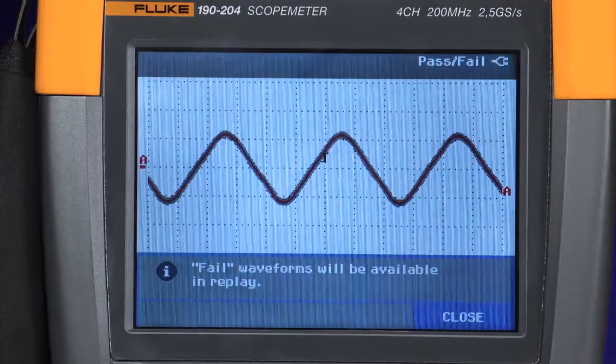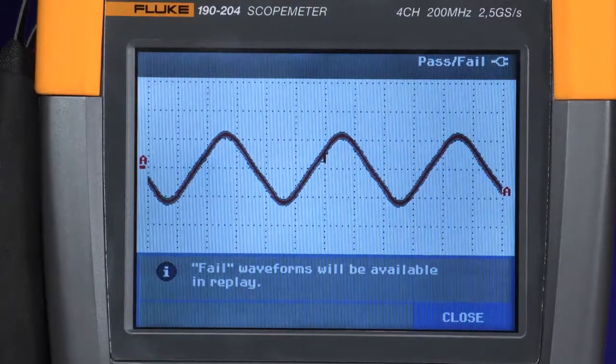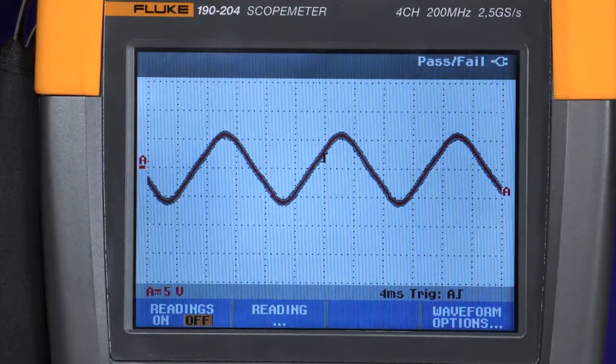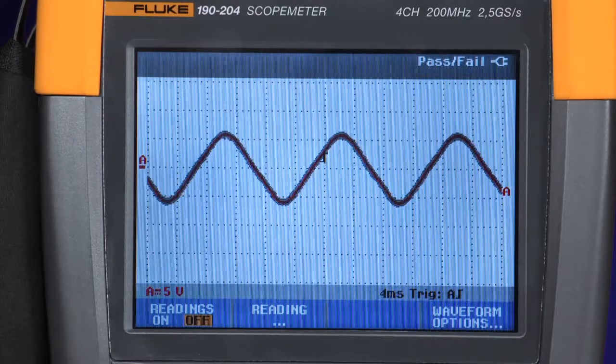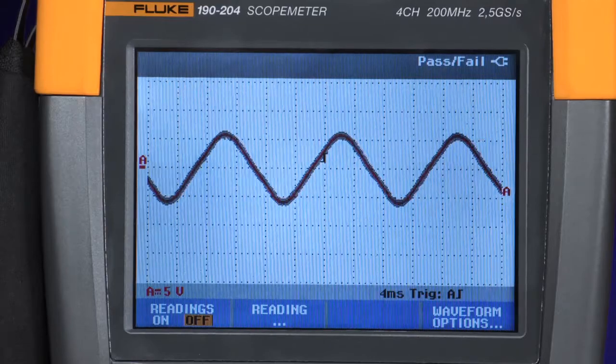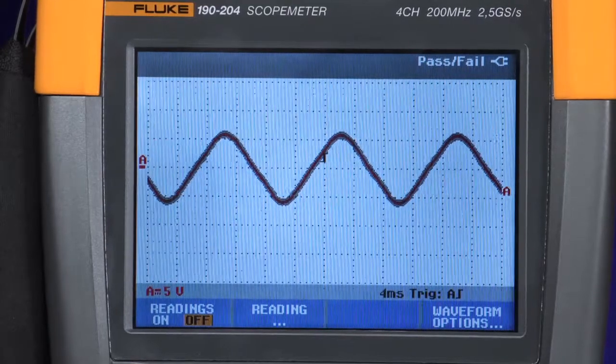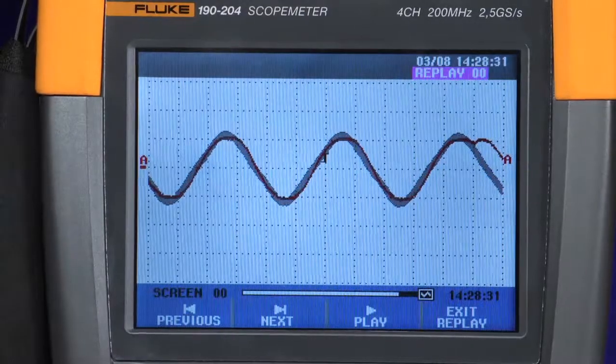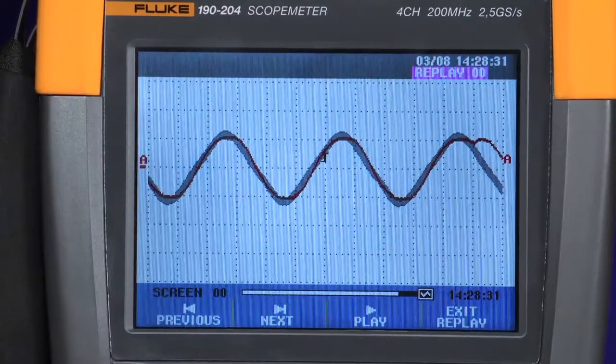Now let's cause an event using the demonstration board. The scope meter will beep indicating that it has captured a fail and stored it in the replay memory. When you return to the scope meter, simply go to the replay mode, access the replay memory, and you can scroll through each of the events one by one.